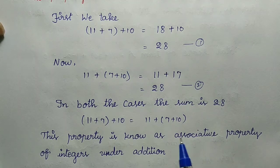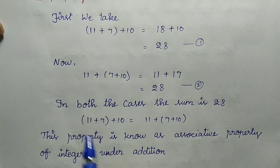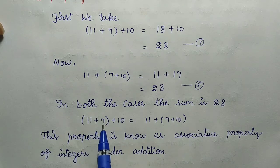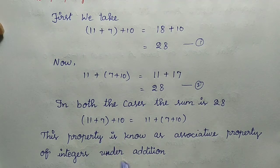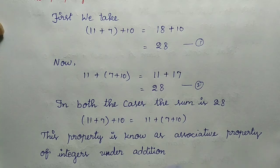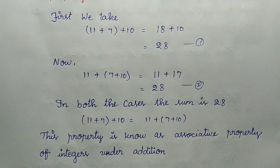the associative property of integers under addition. This is the associative property — valid for addition and multiplication. So with 3 integers, this is the associative property under addition.